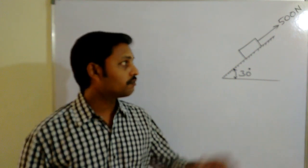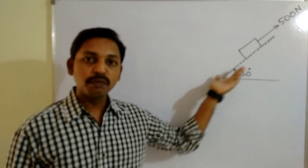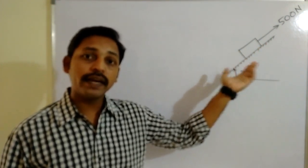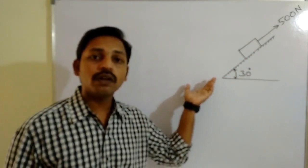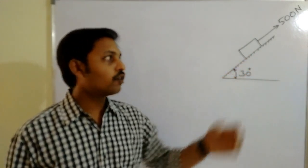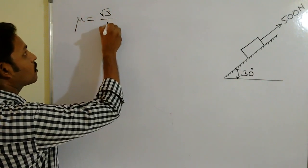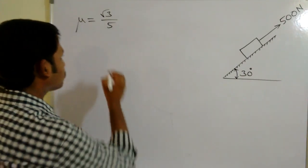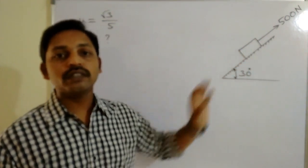The 500 Newton force is able to prevent the sliding motion downward along the plane. By the application of this 500 Newton force, the block is not able to move along the plane — this is given in the problem itself. The coefficient of friction is given as √3/5, and you are supposed to calculate the weight of the block.